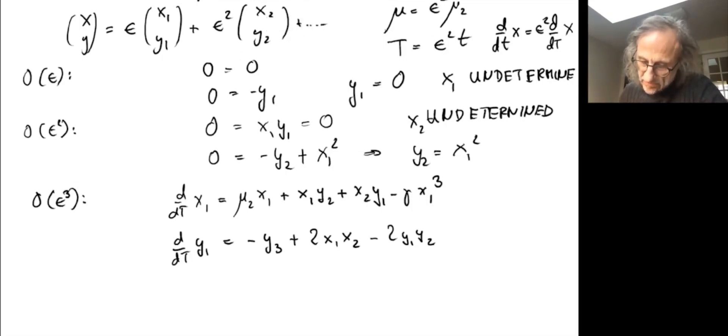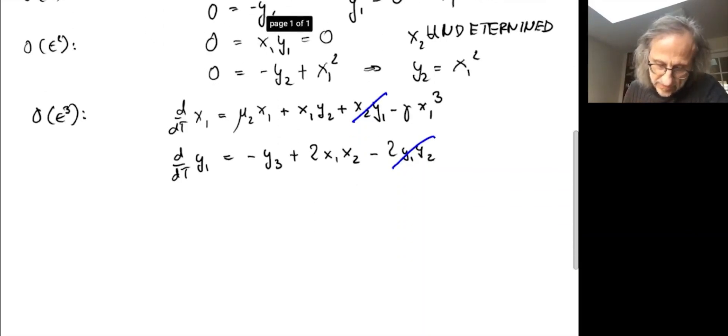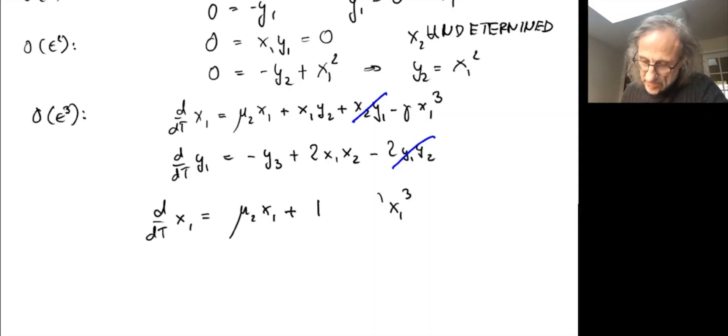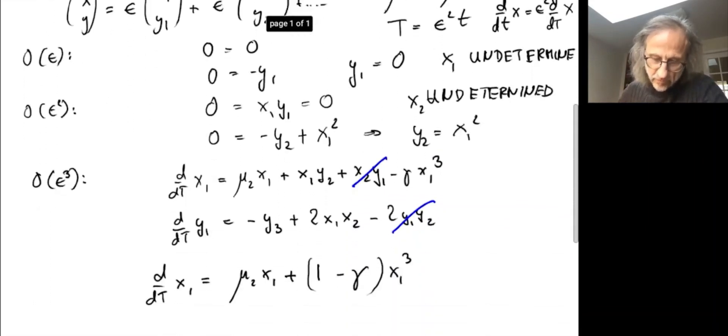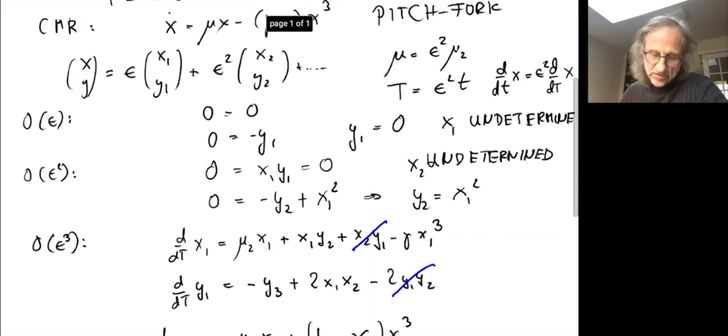We can cast out a bunch of terms because y₁ is zero. So y₁ being zero takes this term out, takes this term out. We know y₂ = x₁². Let's write down our equation for x₁. We get d/dT of x₁ = μ₂x₁ + x₁y₂, which is x₁³, minus γx₁³. That is the same equation we had before, just written in terms of x₁ and μ₂ instead of x and μ, because we factored out the epsilon.